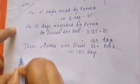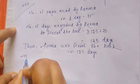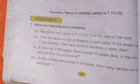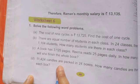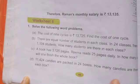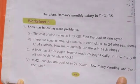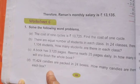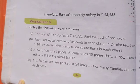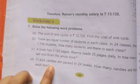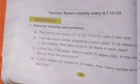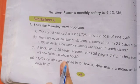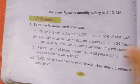Now we solve question number 4 (D). 11,424 candles are packed in 24 boxes. How many candles are there in each box? We write: Candles packed in 24 boxes equals 11,424.